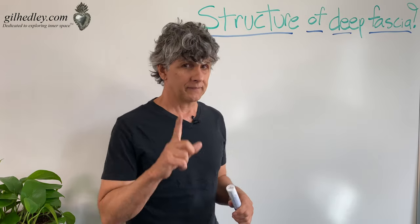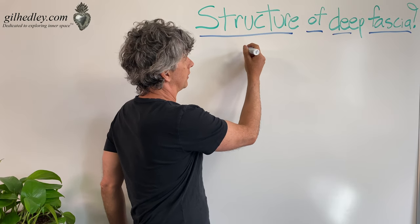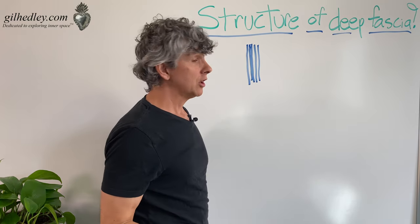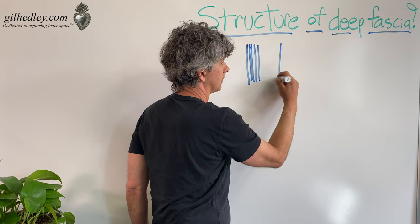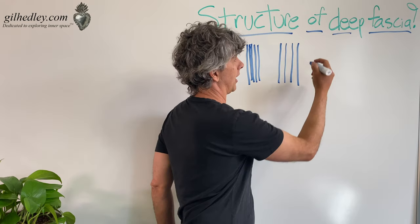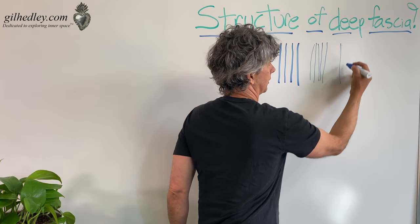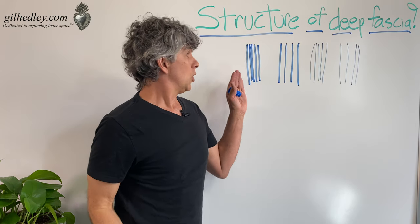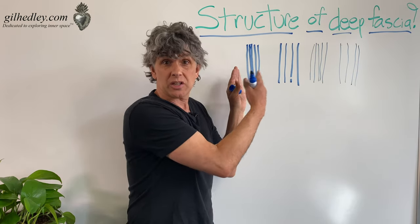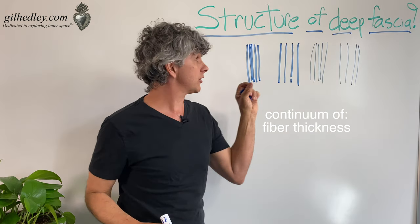A continuum in what way? One dimension is how close the fibers are to one another. Do we have thick fibers that are very close to each other? Do we have thick fibers that are more spaced out? Do we have thinner fibers that are close to each other, or thinner fibers that are more spaced out? So what we can have is a continuum of fiber thickness and the spaciousness between fibers that are regularly lined up.